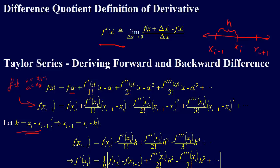So we say f of x i minus 1 equals f of x i, f prime x i over 1 factorial times h, f double prime x i over 2 factorial times h squared, f triple prime over 3 factorial times h cubed, and so forth. You get the idea.